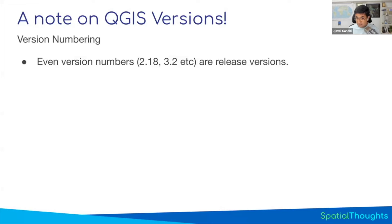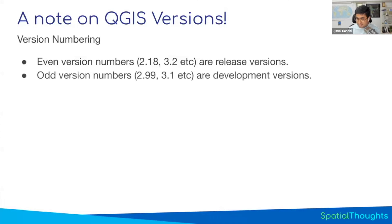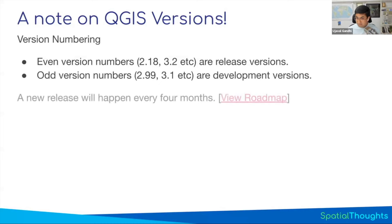For three months people develop QGIS and add features, then there's a feature freeze for one month where no new features are added and everyone tests the next version. Once ready, it's released — for example, 3.37 becomes 3.38. This cycle happens every four months. For someone teaching a course or developing a plugin, having a new version every four months means upgrading QGIS, getting everyone on the same version, and updating your plugin code and instructions. That's too fast for most people.